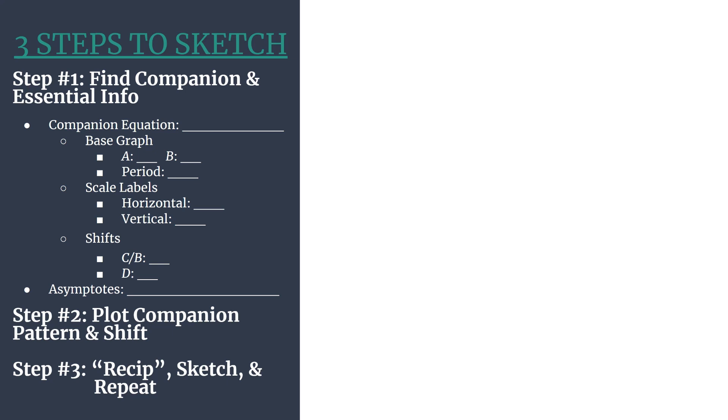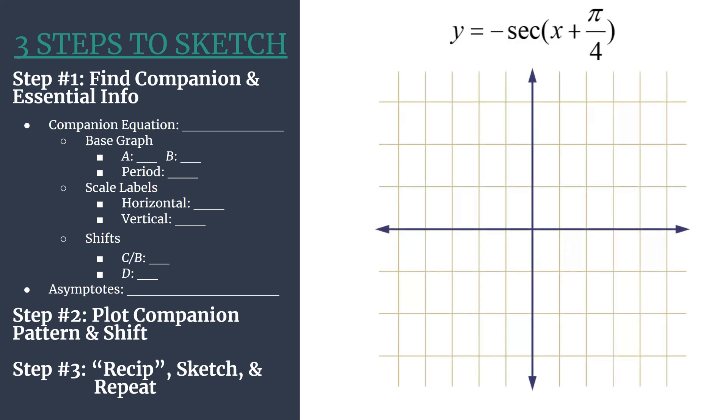In step 2, we'll plot that companion pattern and then take care of the shifts. And in step 3, we'll actually transform what we've done to that point into the reciprocal graph that we want. We'll sketch it in, and then we'll repeat. So let's get started.